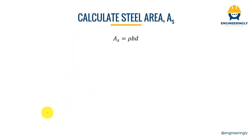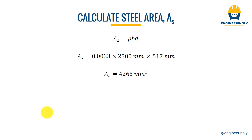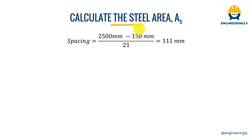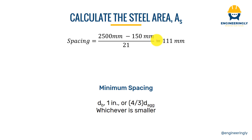The required steel area is As = ρ × b × d = 0.0033 × 2,500 mm × 517 mm = 4,265 mm². Using 16 mm bars with an area of 201 mm² each, we need 4,265 / 201 ≈ 21 bars in each direction. The spacing between bars is (2,500 − 2 × 75) / 20 ≈ 111 mm center-to-center. This spacing satisfies ACI minimum spacing requirements of one bar diameter, 1 inch, or 4/3 times the maximum aggregate size.